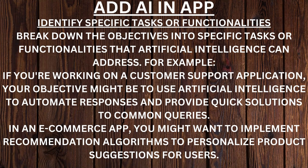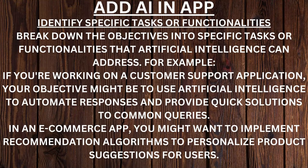automating tasks, enhancing decision-making processes, or optimizing resource utilization. Identify specific tasks or functionalities. Break down the objectives into specific tasks or functionalities that AI can address. For example, if you are working on a customer support application, your objective might be to use AI to automate responses and provide quick solutions to common queries.